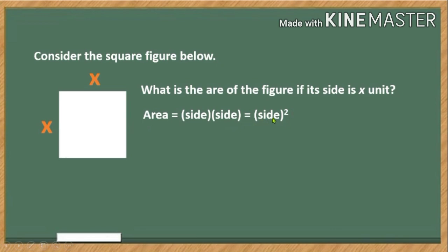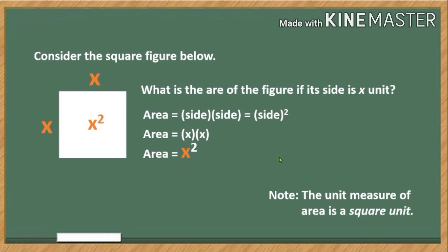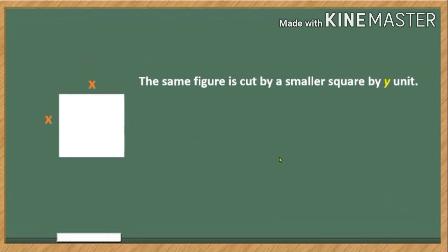The area now is equal to the product of x and itself, which gives us x squared, or x². So the area of this square figure is equal to x squared. Now take note that the unit of measure of area is a square unit.